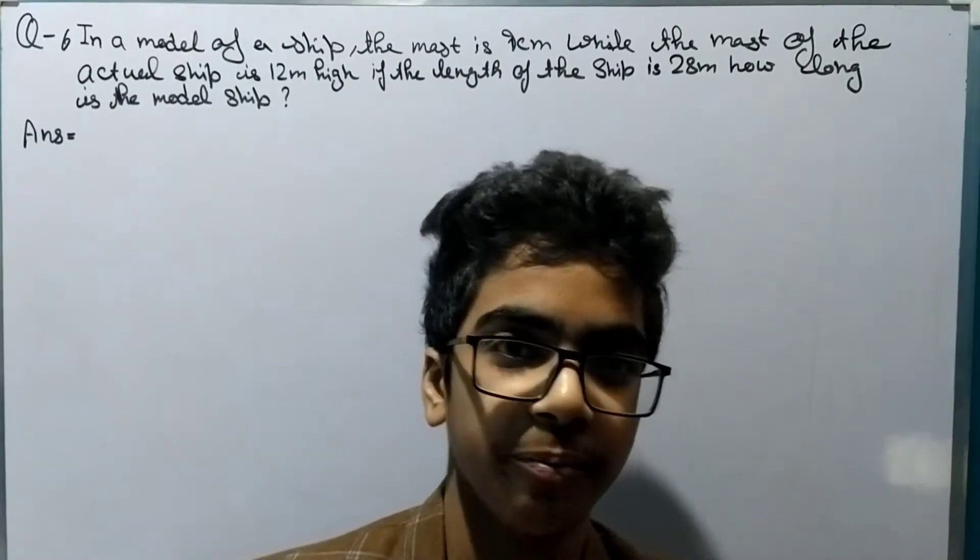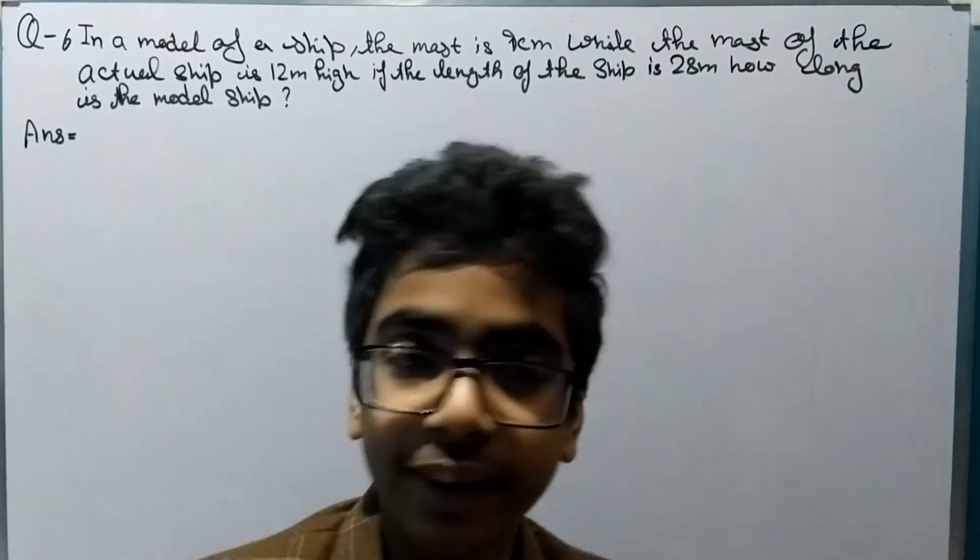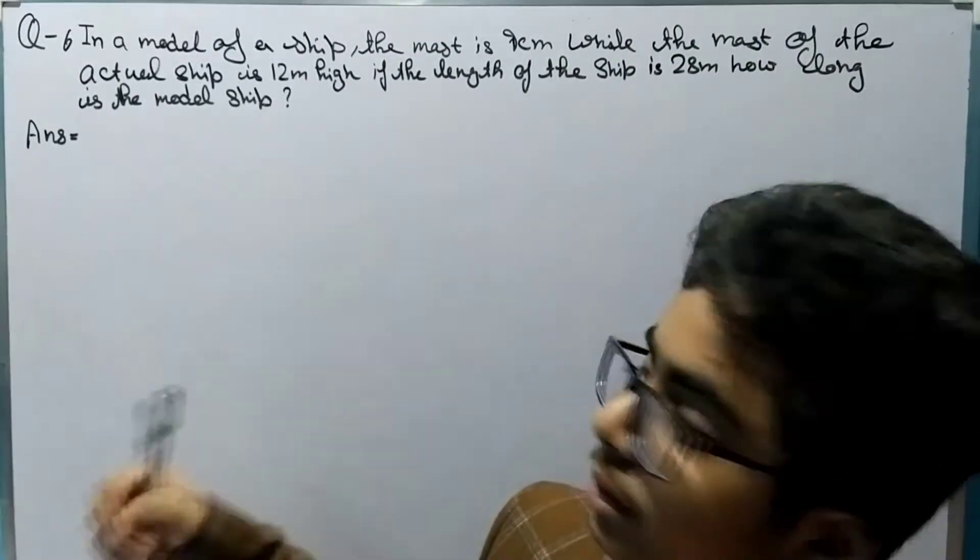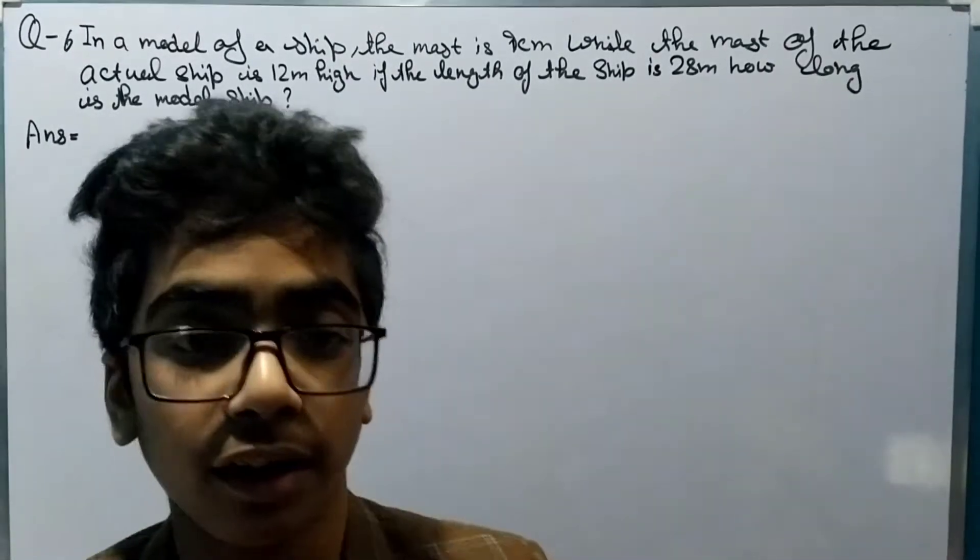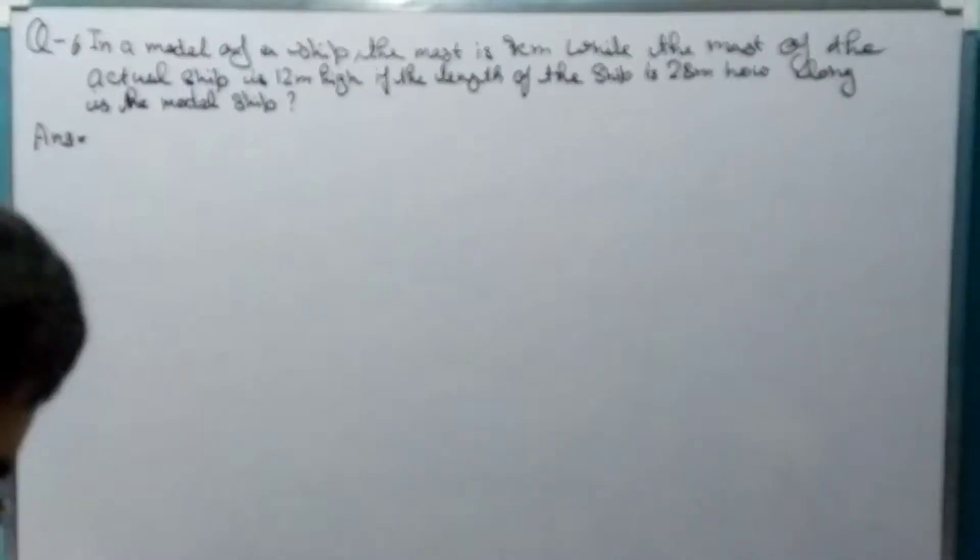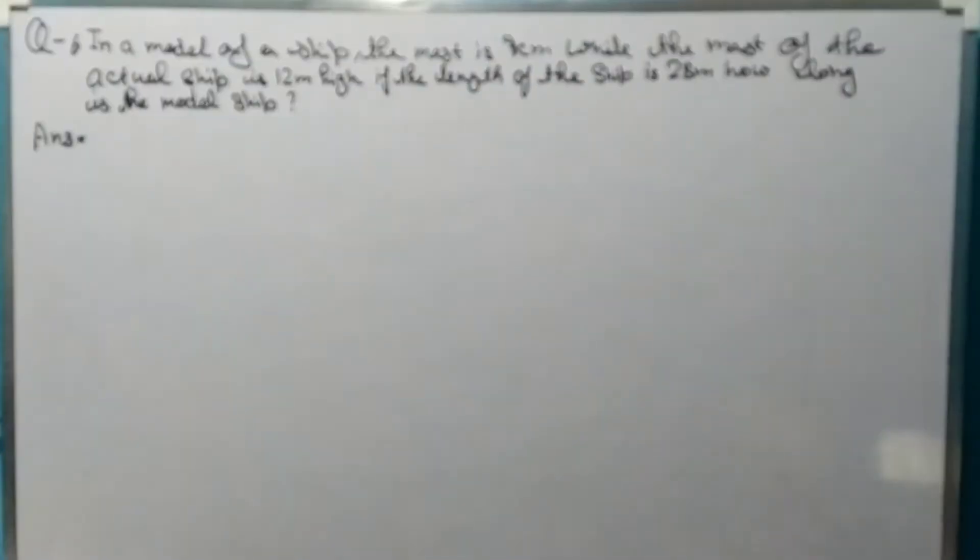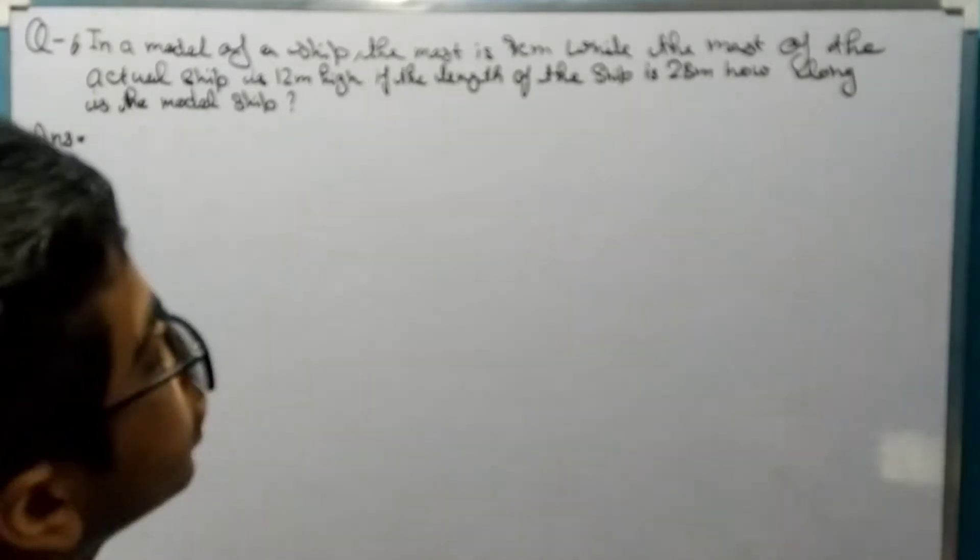Hello everyone and welcome back to Crackies. In this video we are going to do question number 6 of exercise 13.1, class 8 mathematics. So let's begin. The question here says in a model of a ship the mast is 9 centimeter while the mast of actual ship is 12 meter high.